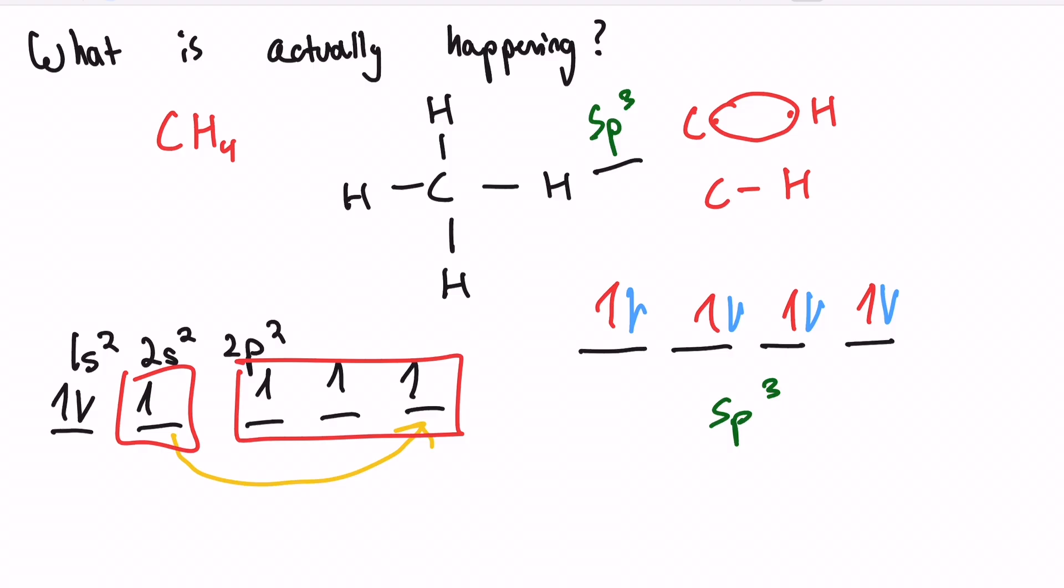I'm going to do this again, this time for the oxygen atom in water. So again, water, chemical formula H2O. And if we were to then draw our Lewis-Dot diagram, we can see that water, the oxygen atom, is also sp3 hybridized. What is the electron configuration for water? It is 1s2, 2s2, 2p4.